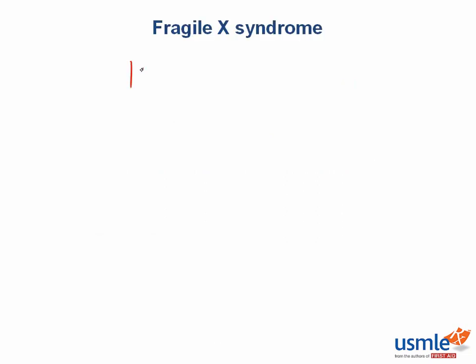Fragile X syndrome occurs in about 1 in 4,000 people and has a trinucleotide repeat disorder of CGG trinucleotides in the gene FMR1. This gene is on chromosome X and stands for Fragile X Mental Retardation 1. The product of this gene plays a role in brain development.